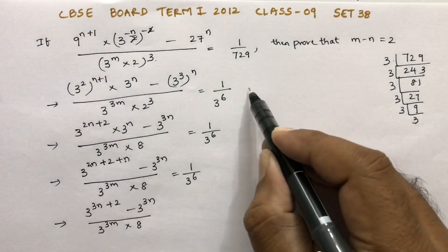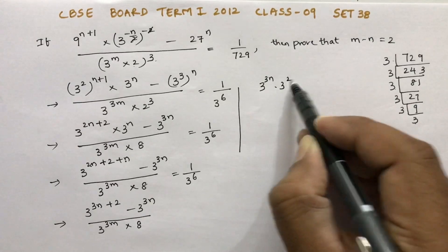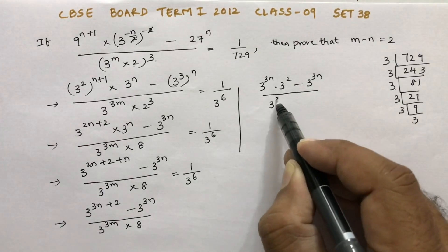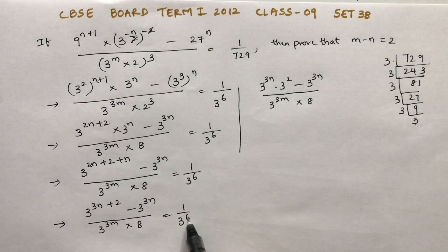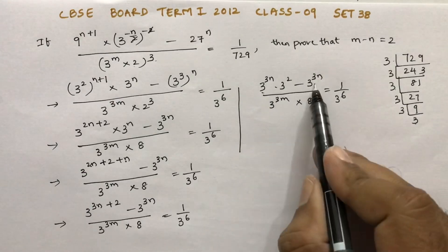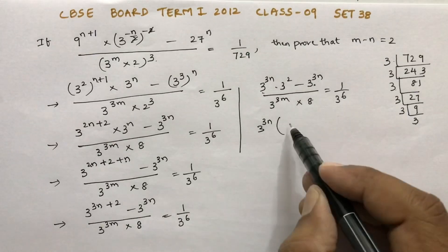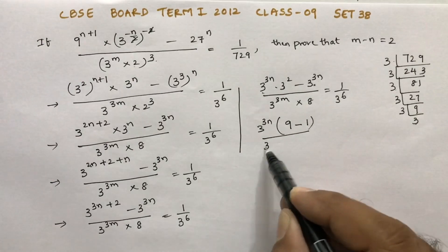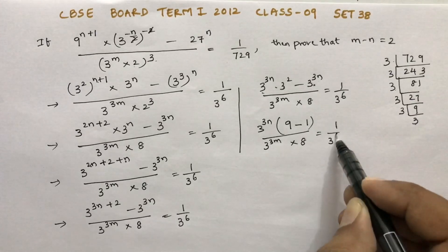So here, 3 power 3n into 3 squared, minus 3 power 3n, by 3 power 3m into 8, equals 1 by 3 power 6. I take 3 power 3n as common, so we get 3 power 3n into 8 equals 1 by 3 power 6. That gives 3 squared minus 1, which is 9 minus 1 equals 8.